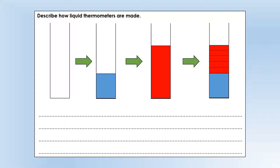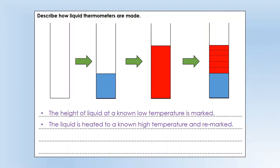So the first thing we're going to look at is how liquid thermometers are made. These are the thermometers that you will typically use in a lab. They're very simple to make. First you put some liquid into a column at a low temperature and you mark the height of the liquid. Then you heat the liquid up to a known high temperature and you remark it. So essentially we've now got two marks on our measuring device.